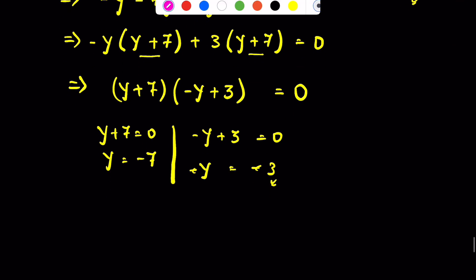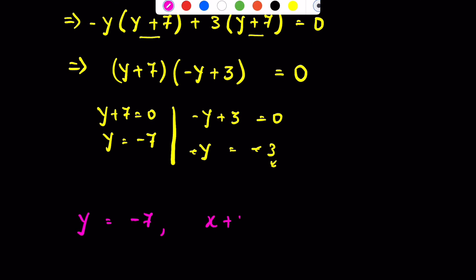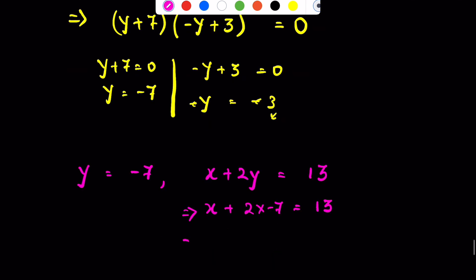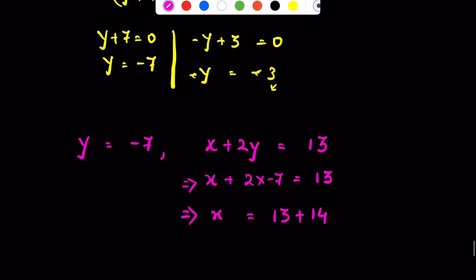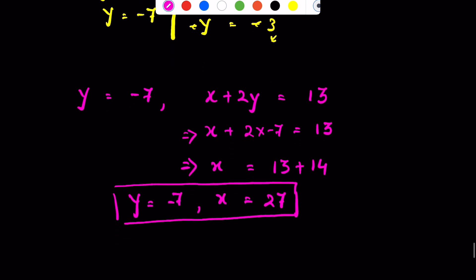When y is equal to minus 7, substituting into x plus 2y equals 13: x plus 2 times minus 7 equals 13, so x minus 14 equals 13, giving x equals 27. So the first solution is x equals 27, y equals minus 7.